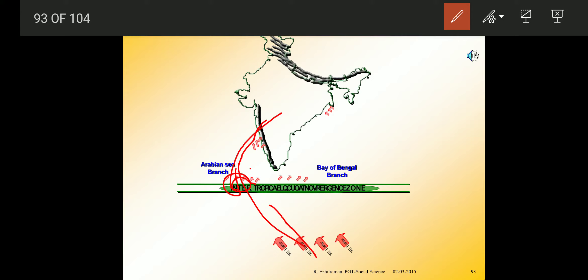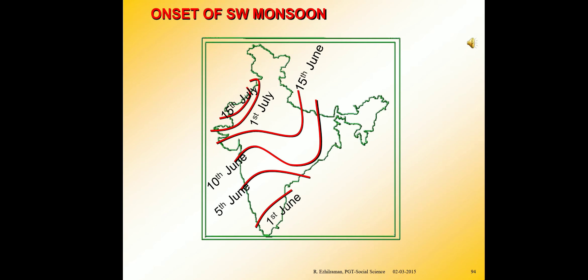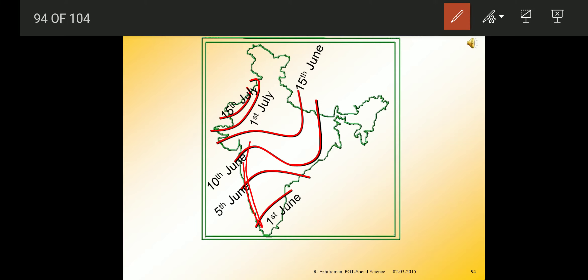The inflow of these southwest monsoons brings a total change in weather conditions. Early in the season, the windward side of the Western Ghats receives very heavy rainfall in the coastal regions — more than 250 centimeters. In comparison, the Deccan Plateau and Madhya Pradesh also receive some rainfall despite lying in rain shadow areas. Maximum rainfall of this season is received in the northwestern part of India.